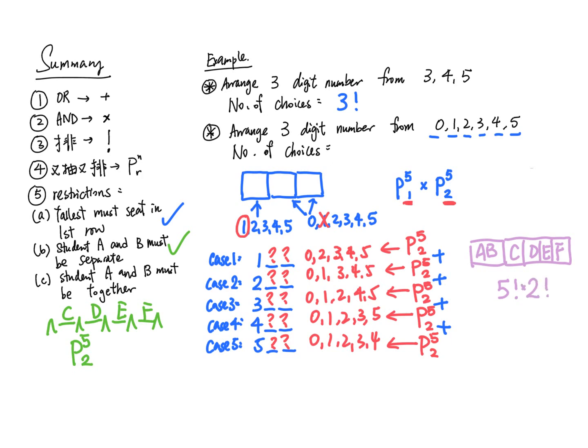For part c, if A and B must sit together, group A and B together. Then treat C, D, E, F as independent individuals since they have no restrictions. Consider there are five things. These five things rearrange first, then A and B can also exchange positions - AB or BA - so multiply by an additional 2!. These three types of questions are the most common - practice more of these problems.